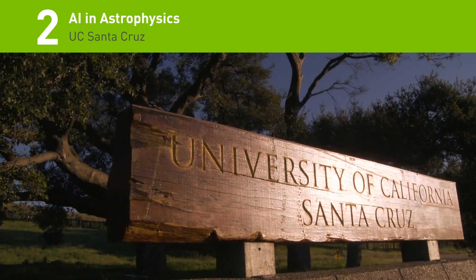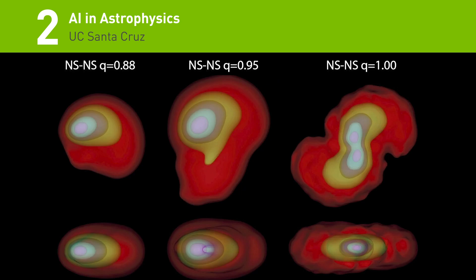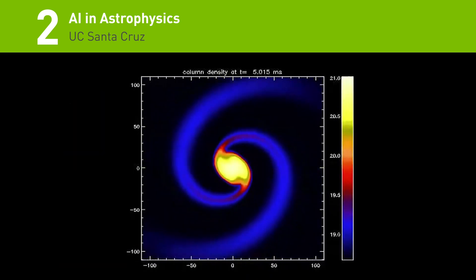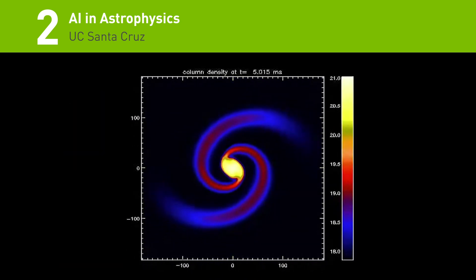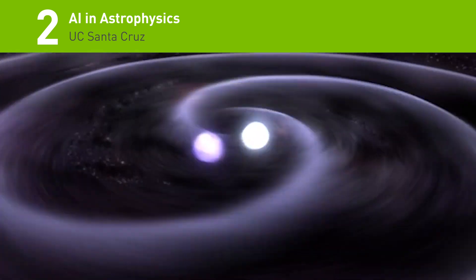Here, the deep learning framework will allow astronomers to identify and categorize astronomical objects in enormous data sets with more fidelity than ever before.